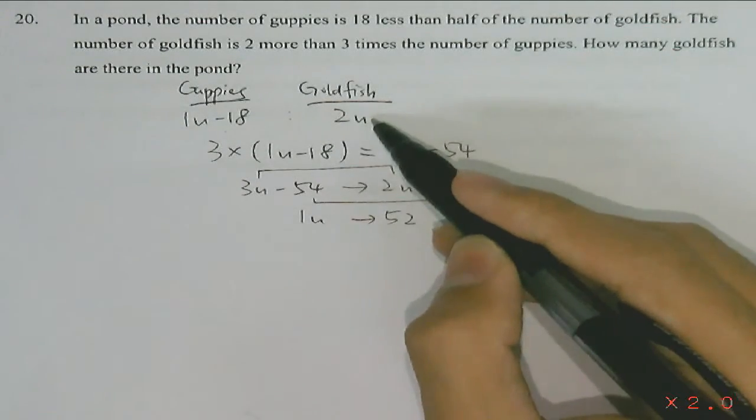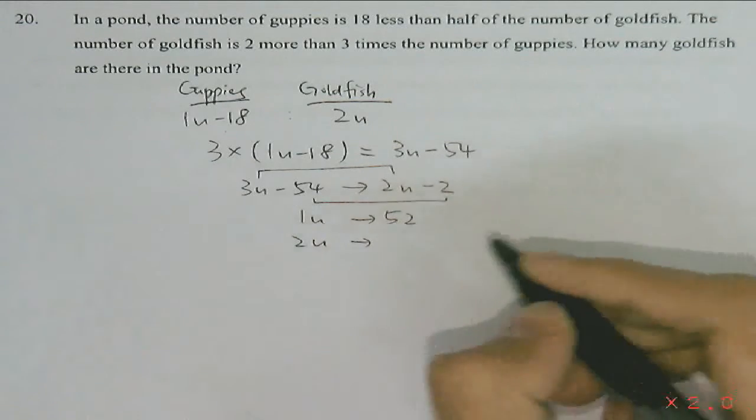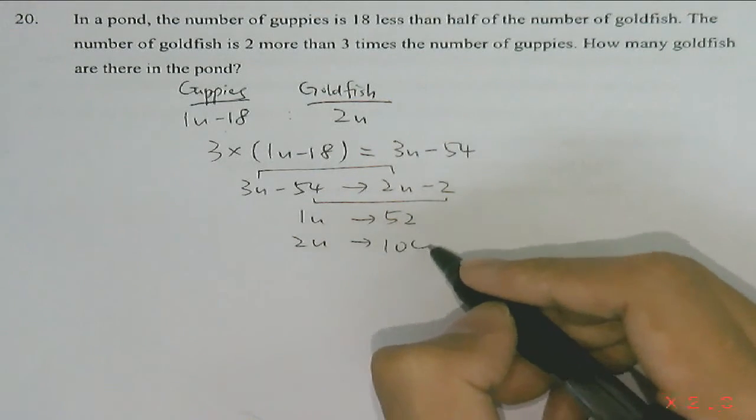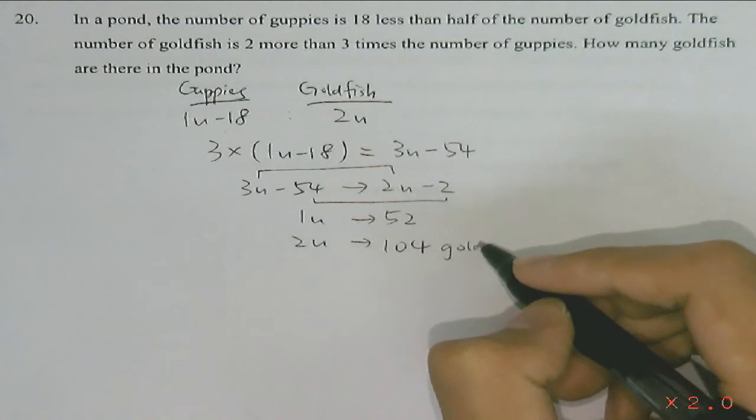Since goldfish is 2 units, we will find 2 units by multiplying 52 with 2, and we will have our final answer of 104 goldfish.